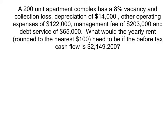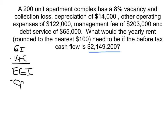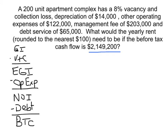In this problem you're going to need to work backwards to calculate what the gross income needs to be in order to have a cash flow of $2,149,200. Recall: gross income minus vacancy and collection is effective gross income; back out operating expenses to get net operating income; back out debt service and you have your before tax cash flow.